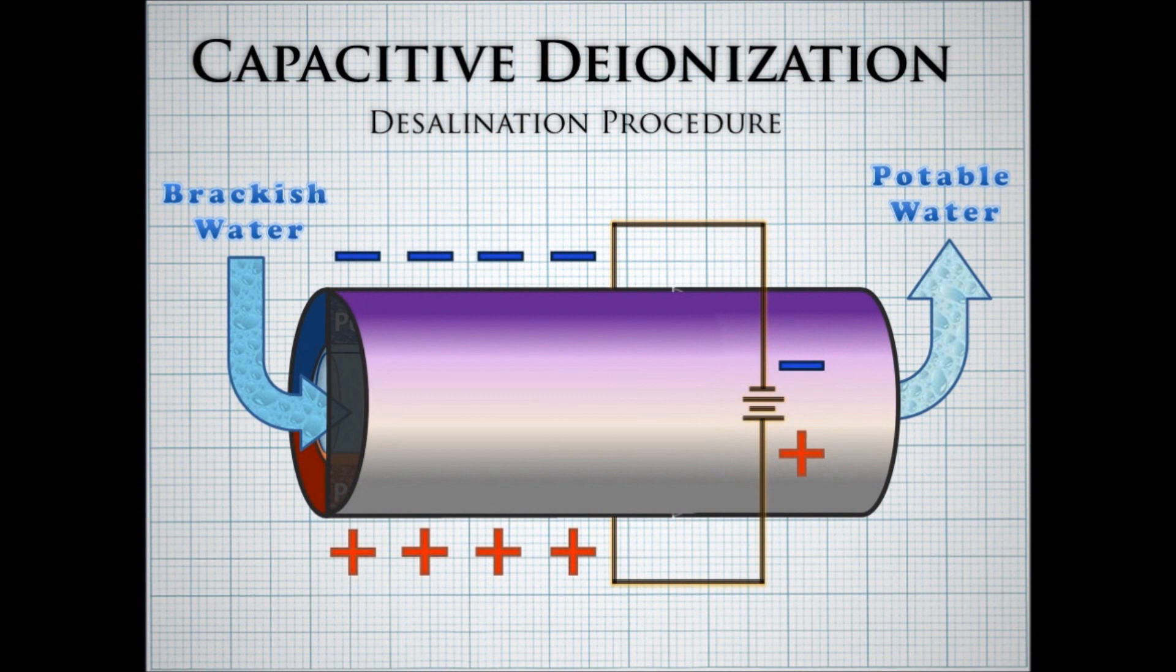Capacitive deionization is a method of filtering ocean water or brackish water to remove the salts and make it safe to drink. It uses conductive carbon nanosponges which soak up salt ions and impurities when we apply a charge to them. A glass filter can be used in between the positive and negative electrodes to keep the electrodes from touching and shorting out.